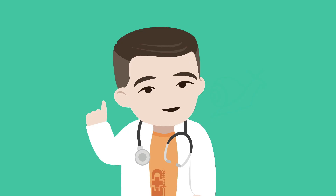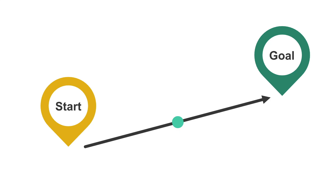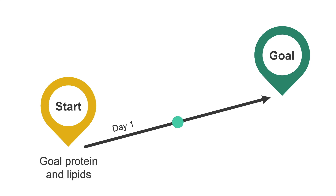You'll typically start your patient out with half goal dextrose in their day one TPN. It's fine to start out at goal protein and goal IV lipids on day one, since they're not associated with refeeding syndrome, and this helps increase the total calories provided by the solution.